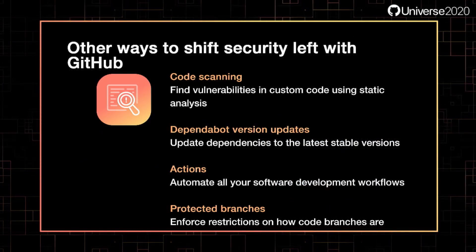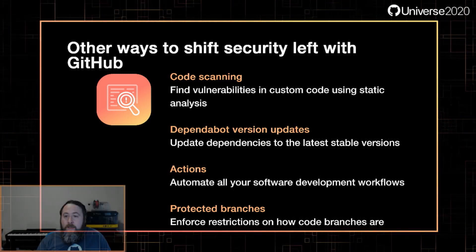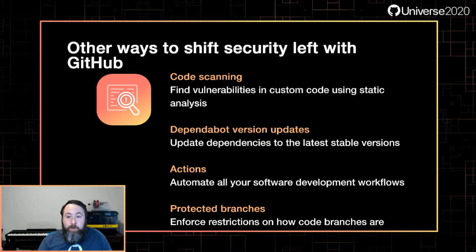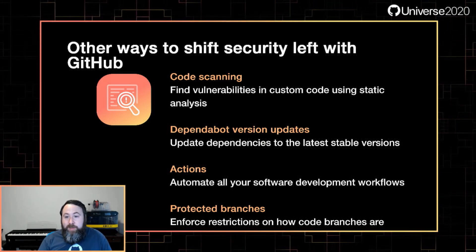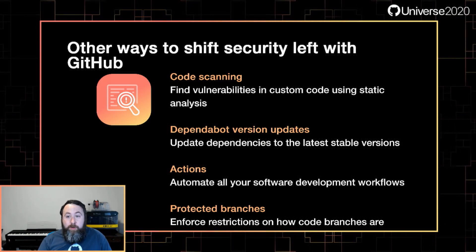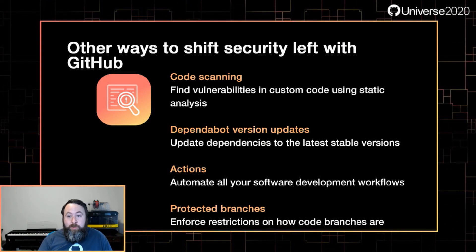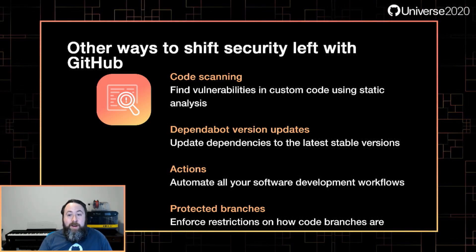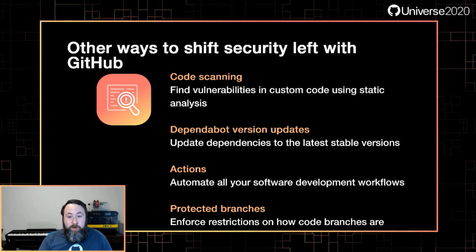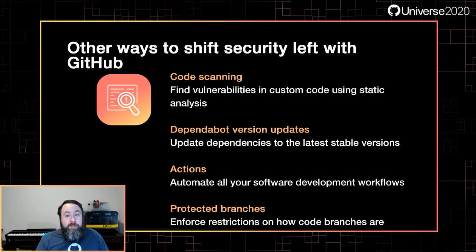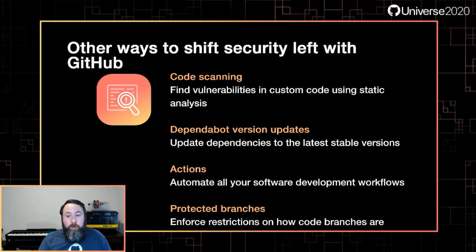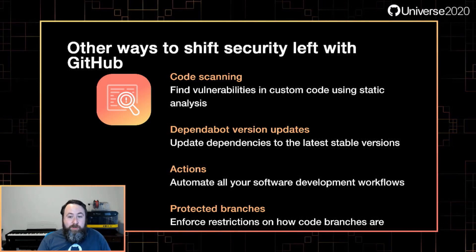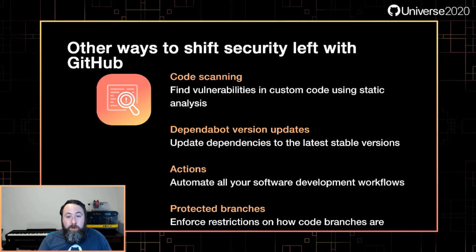GitHub provides other ways to shift left. You can use code scanning to run static analysis, including CodeQL, but also any code scanning tool that outputs industry standard SARIF. Dependabot version updates will help keep you on the latest stable version of your dependencies, which can help avoid undiscovered vulnerabilities. You can use Actions to run build, test, or other automation on pull requests to validate changes. And you can use protected branches and check suites to ensure these requirements are met when merging into specific branches.